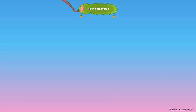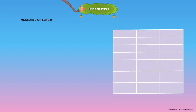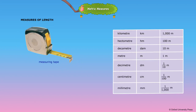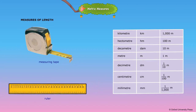Metric Measures: Measures of Length. The standard unit of length is meter (m). The higher units of length are kilometer (km), hectometer (hm), and decameter (dam). The smaller units of length are decimeter (dm), centimeter (cm), and millimeter (mm). We use a measuring tape or ruler to measure length.